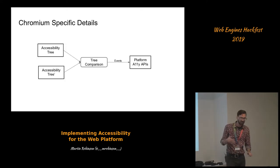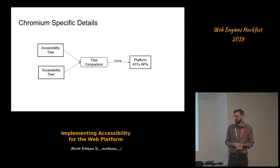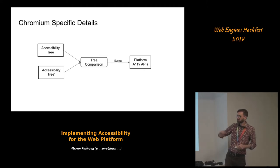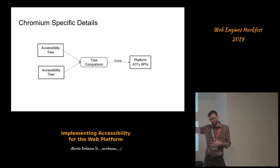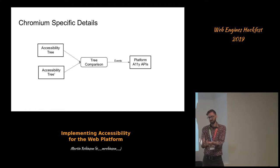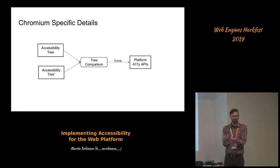Finally, this is something specific to Chromium — there are events that can be triggered from the browser that touch the assistive technology. The way this works in Chromium is: the page changes, you had an old accessibility tree and a new one. Chromium takes the two trees, compares them, and from that comparison it says things like 'your children changed' or 'you're the same node but you have different text now.' From that comparison, it generates events.